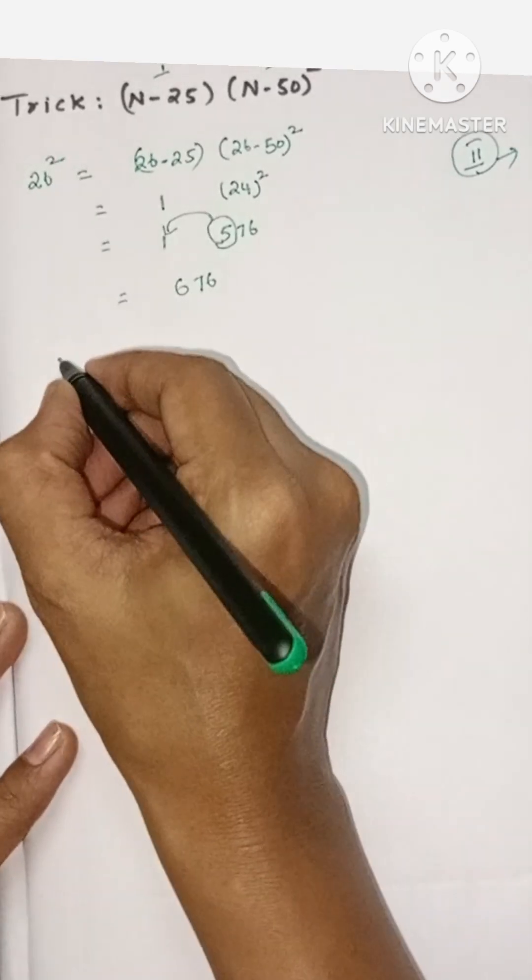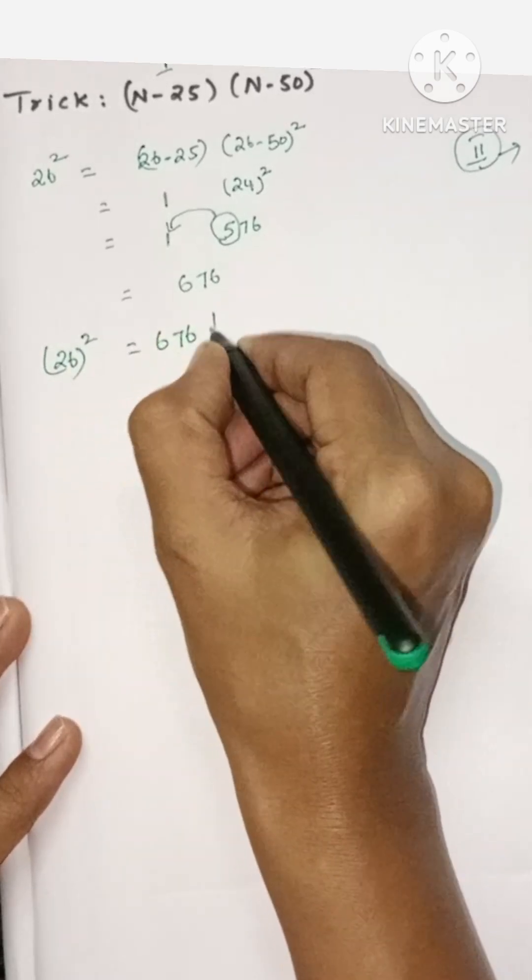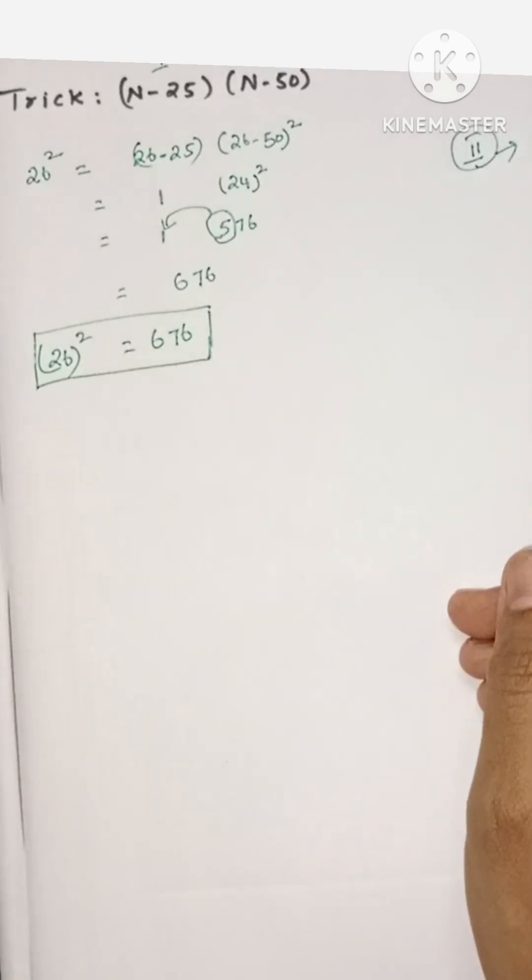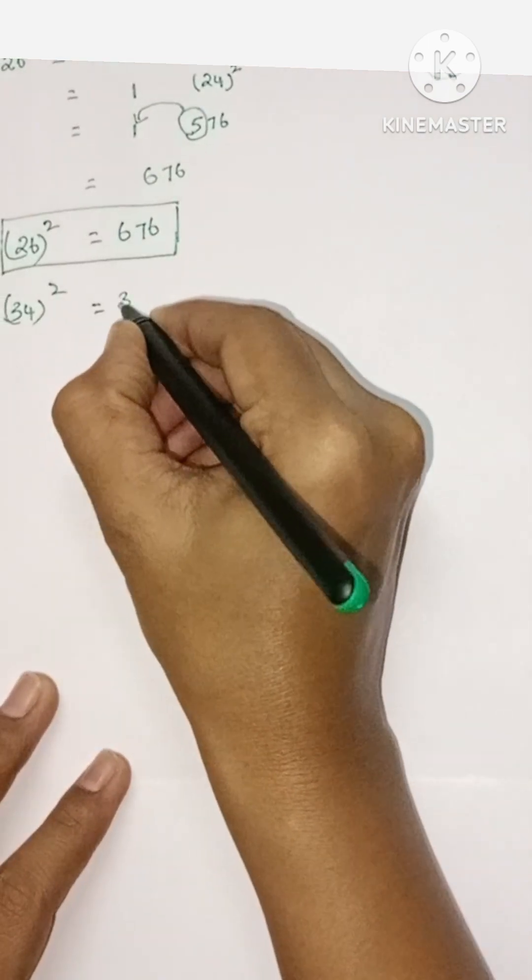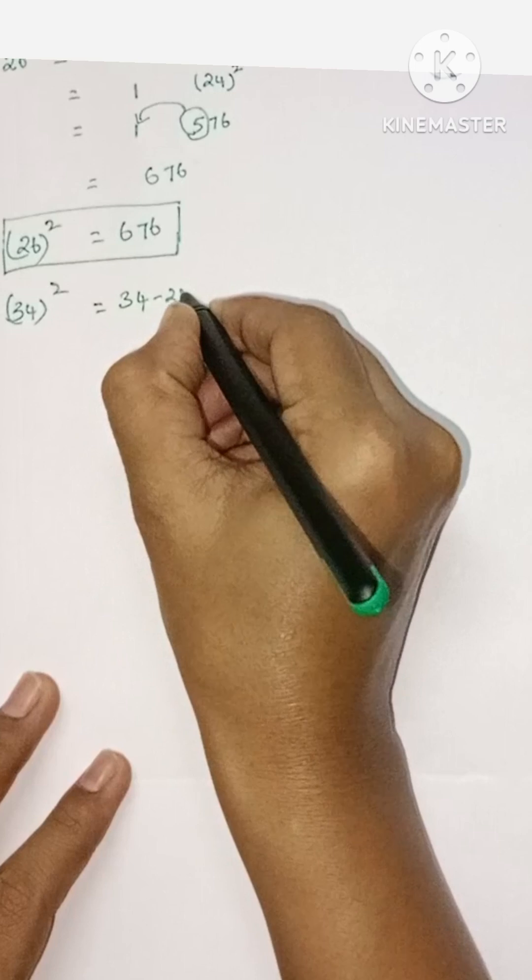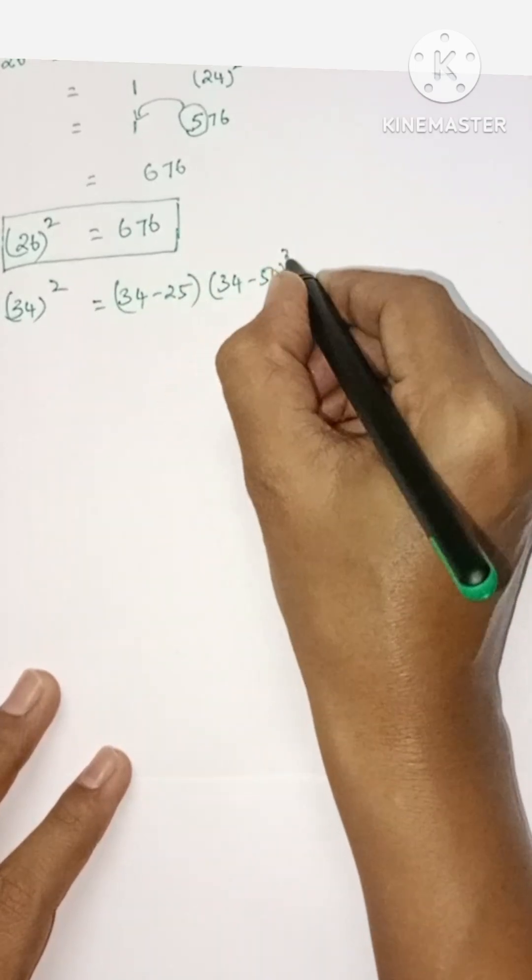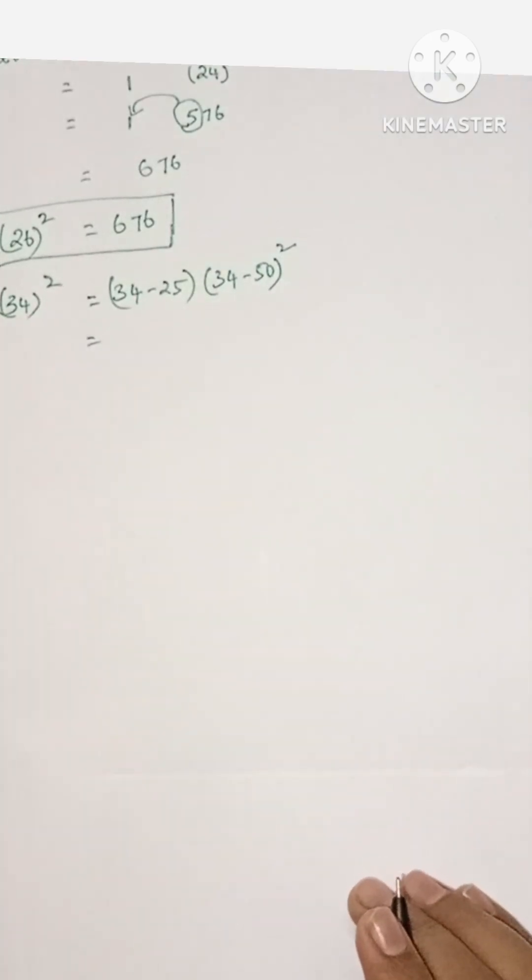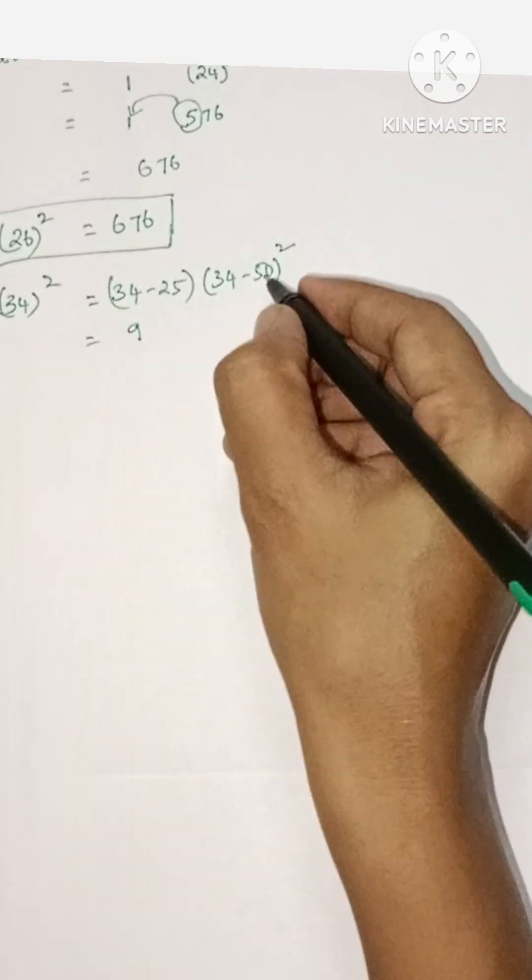So 26 square equals 676. Very easily you can calculate. Now we will see another example: 34 square. So 34 minus 25 is 9, and 34 minus 50.